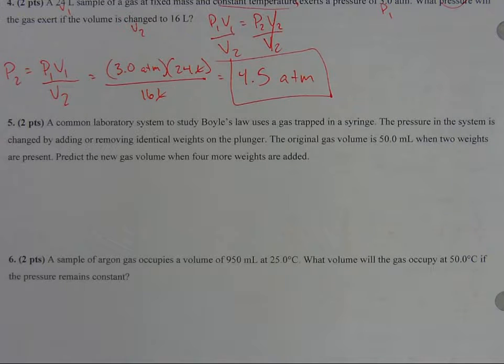The pressure in the system is changed by adding or removing identical weights to the plunger. The original gas volume is 50 milliliters when two weights are present. Predict the new gas volume when four more weights are added.